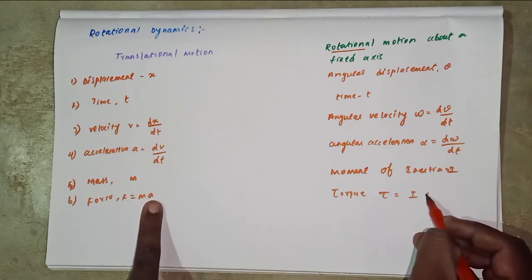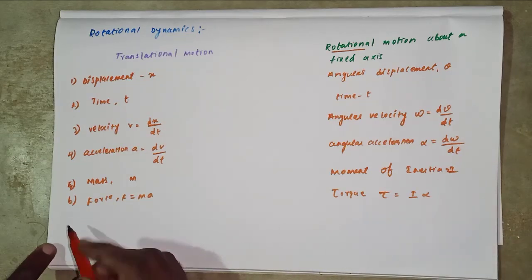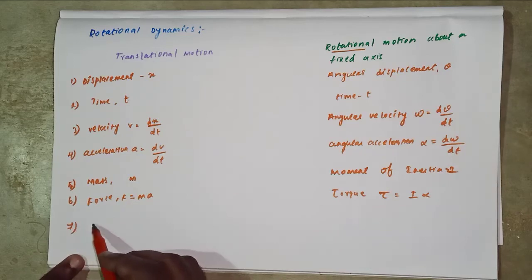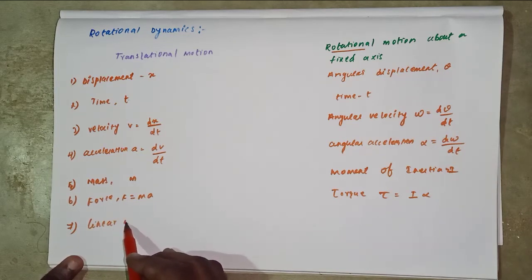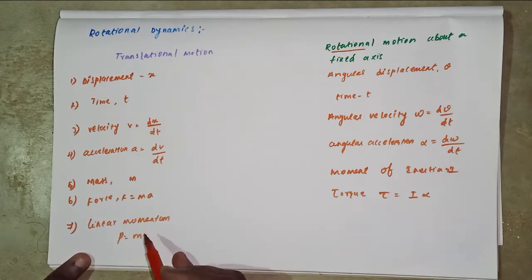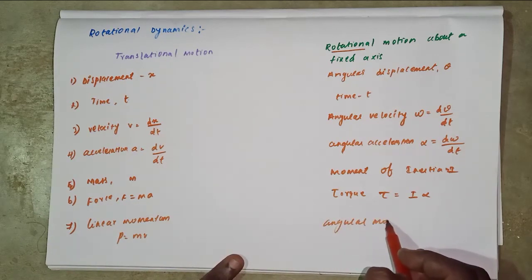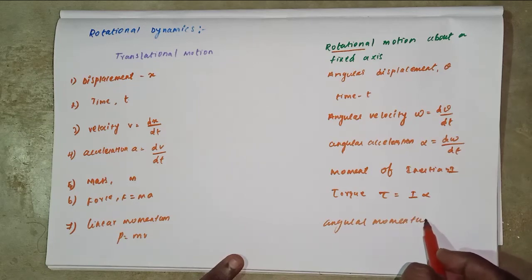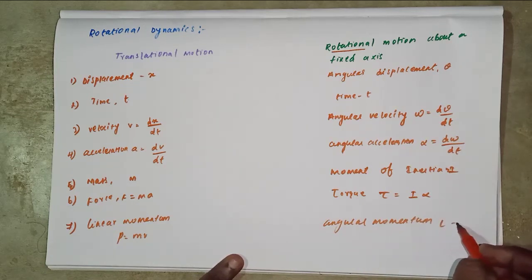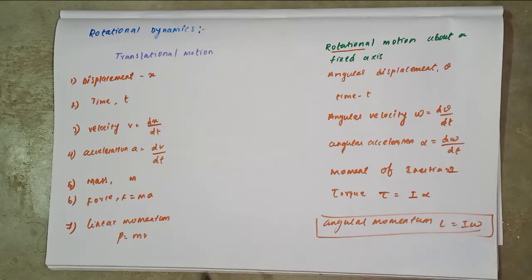Seventh one, linear momentum p equal to mass into velocity. Angular momentum L equal to I omega.